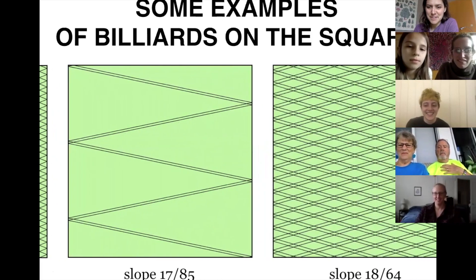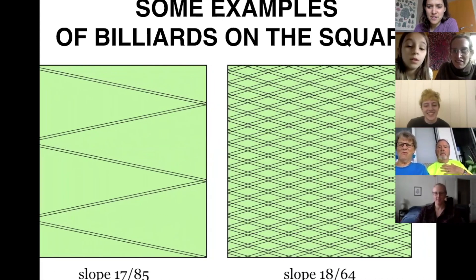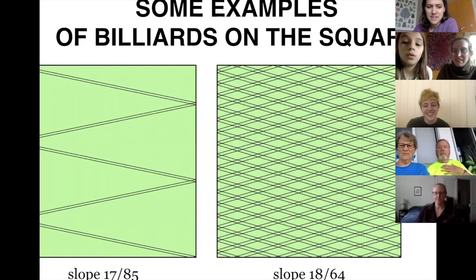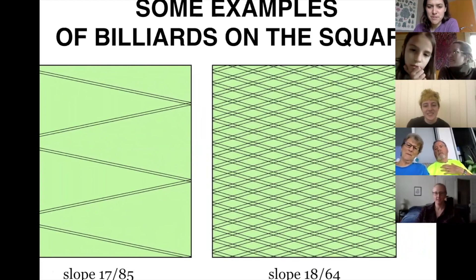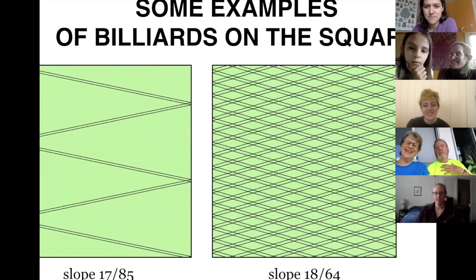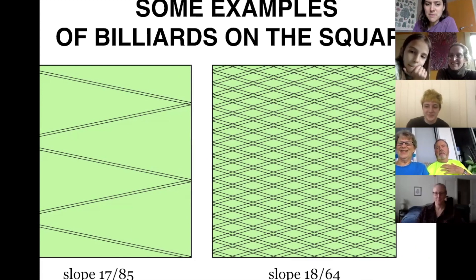How about 17 over 85? And then 18 over 64 — the purpose of that one is that 1864 is when Swarthmore was founded. So that's the idea.